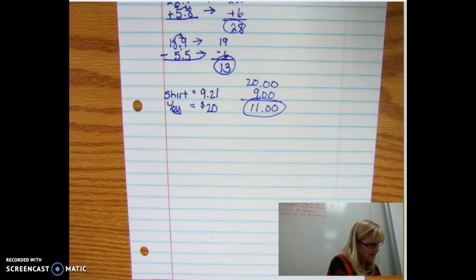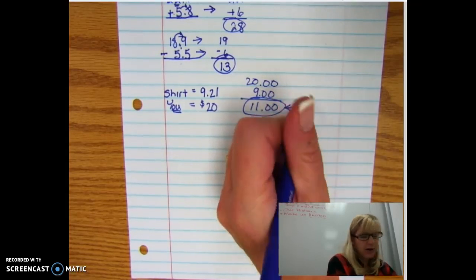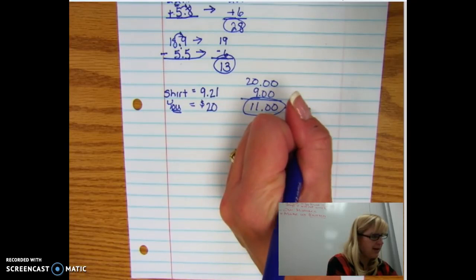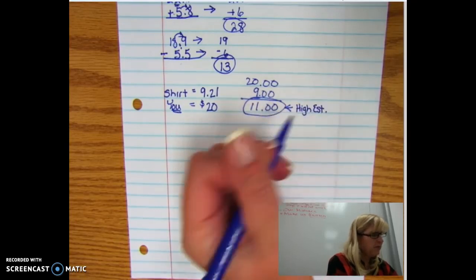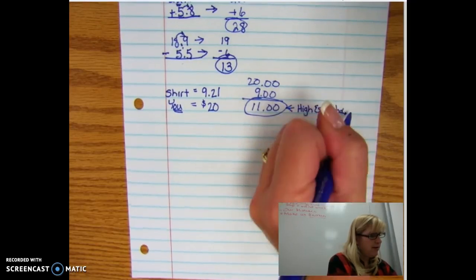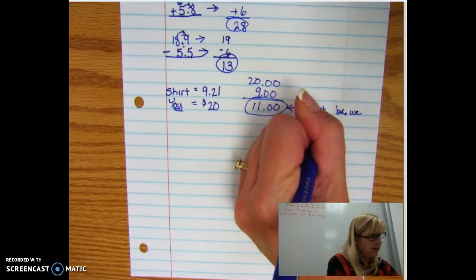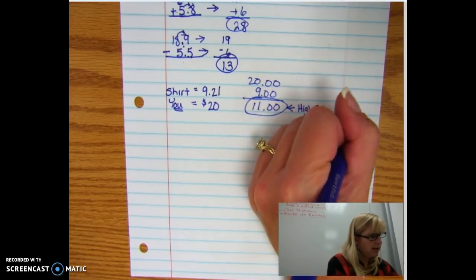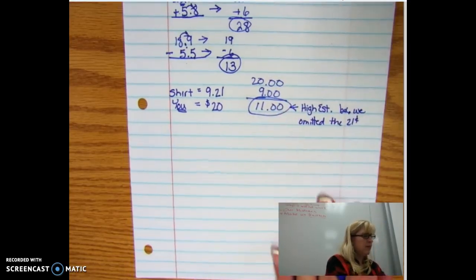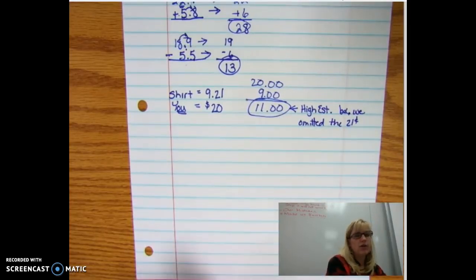This is a high estimate. I'm going to put that down because we did high and low estimates early in the year. This is a high estimate because we know we didn't have... I'm going to say because we omitted the 21 cents. So if you're able to in your head mentally take 21 cents from there, you know you're going to be a little lower than that.